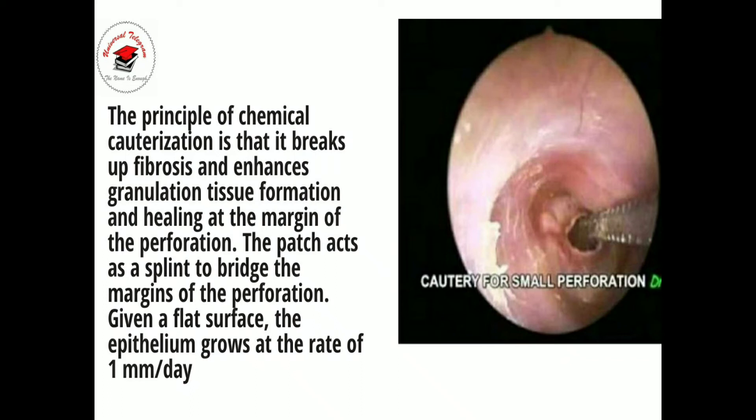Next is cautery. Cautery is often used to reduce the amount of granulation tissue and to control its formation. The principle of chemical cauterization is that it breaks up fibrosis and enhances granulation tissue formation and healing at the margin of the perforation. Bipolar cautery can be used in the clinic, but chemical cautery using silver nitrate is more commonly used. Excision of granulation tissue can be accomplished in the clinic using a microscope and micro-instruments. Silver nitrate is often used to control bleeding and enhance efficacy after granulation tissue is removed; the epithelium grows at a rate of one mm per day.